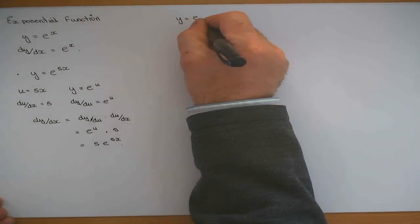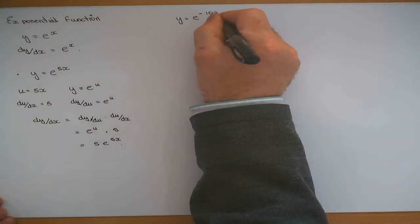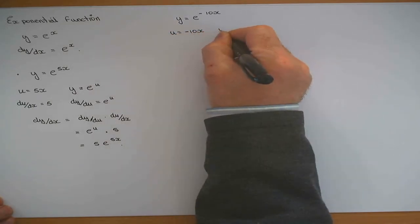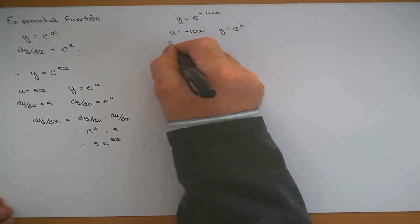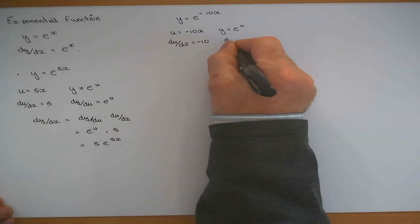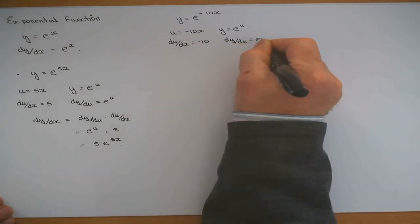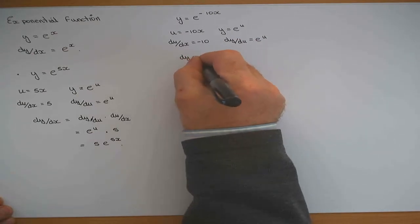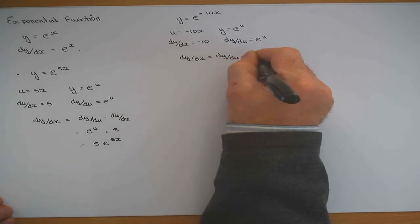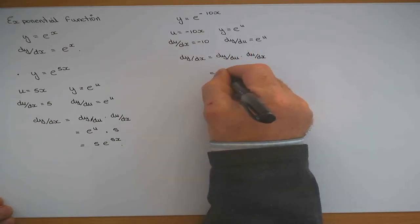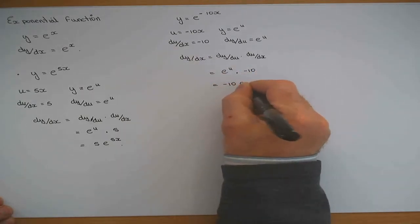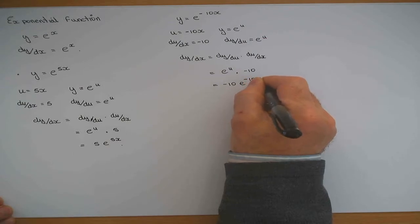If y was equal to e to the power of minus 10x, it's a function of a function. u is minus 10x, and y is equal to e to the u. du/dx is differentiate minus 10x, and dy/du is differentiate e to the u. Therefore dy/dx equals dy/du times du/dx, which is e to the u times minus 10, giving minus 10 times e to the minus 10x.